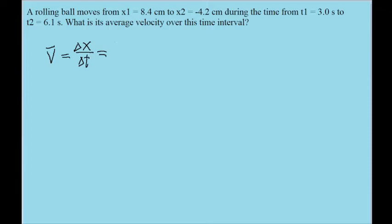So in other words, we just take the final position, which in this case is negative 4.2 centimeters, subtract it from the initial position, 8.4 centimeters in this case, and then divide the whole thing by the same procedure for time.